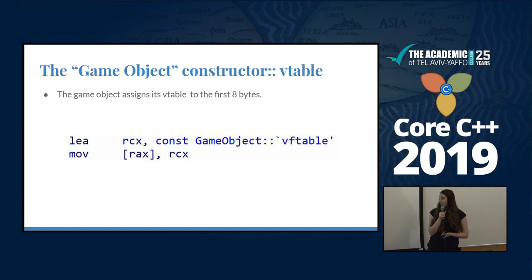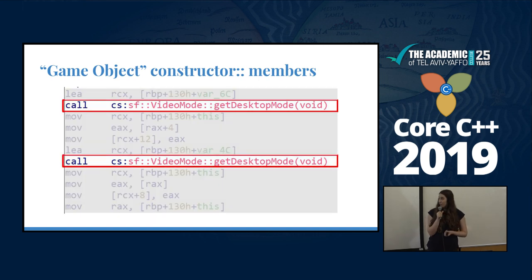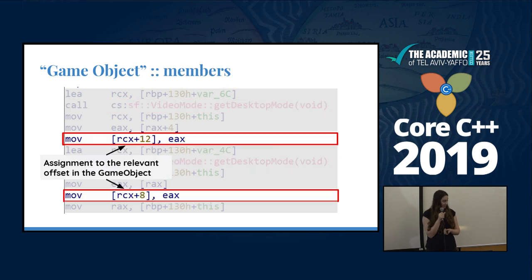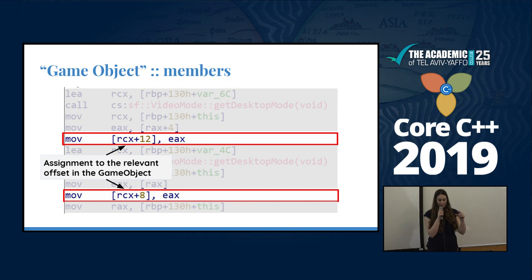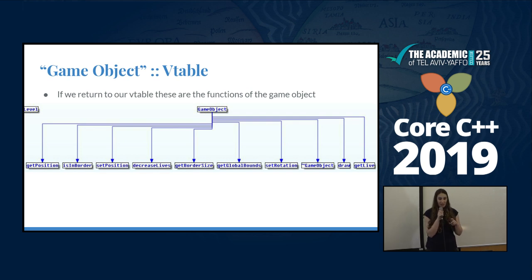Looking at the game object constructor, you can see a simple assignment of the Vtable of game object to the first eight bytes of RCX. We also want to understand the members better. Since there is inheritance, we want to understand how the parent game object looks to understand the spaceship itself. We have two calls for functions, and we can see the return value in EAX is moved into offsets 8 and 12 — meaning the second member is divided into two parts of four bytes each.